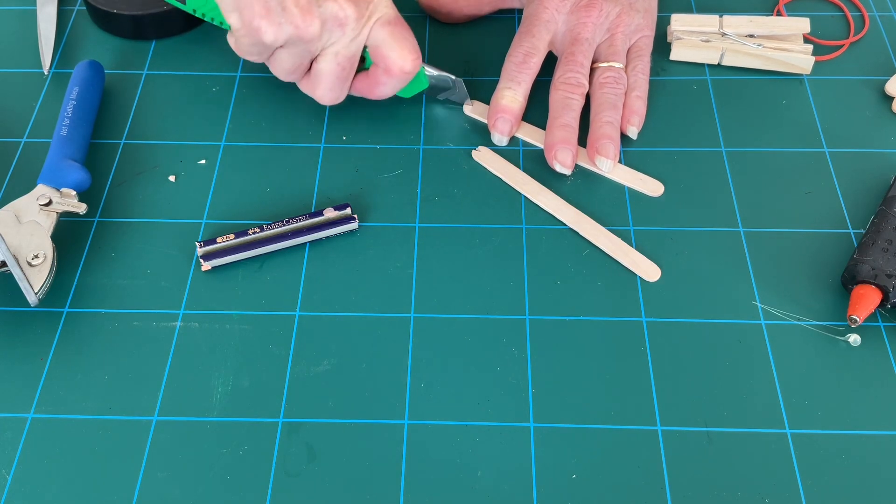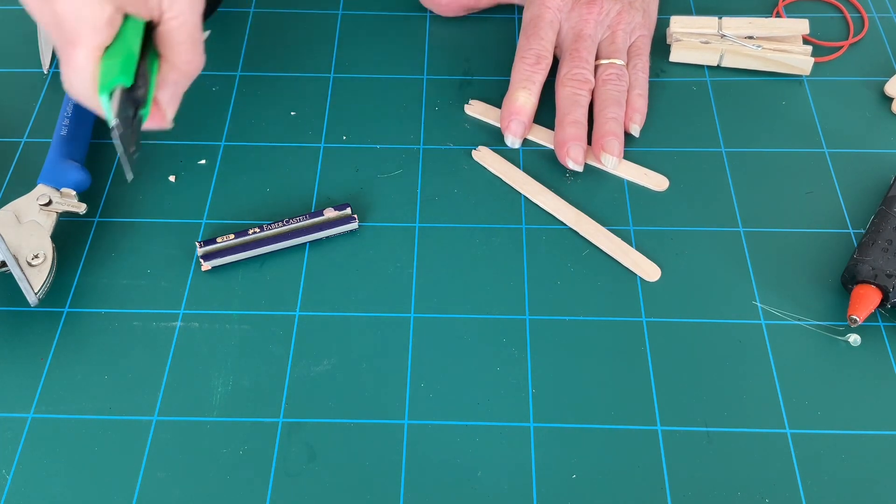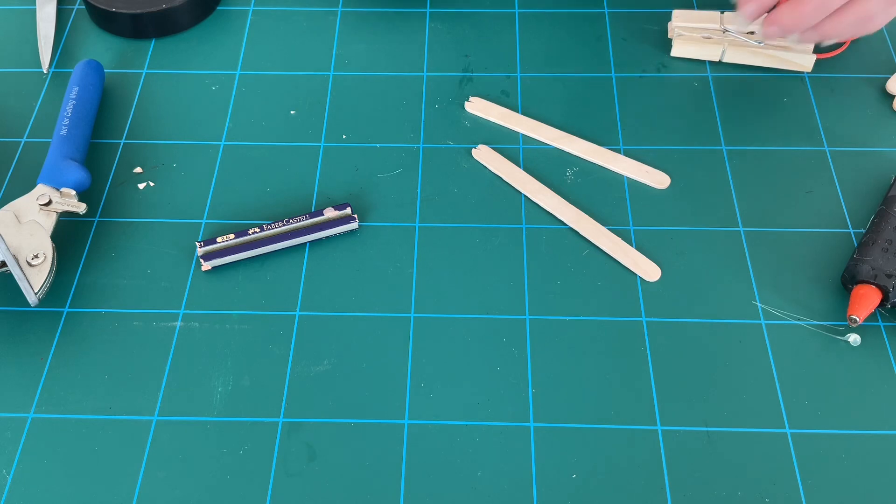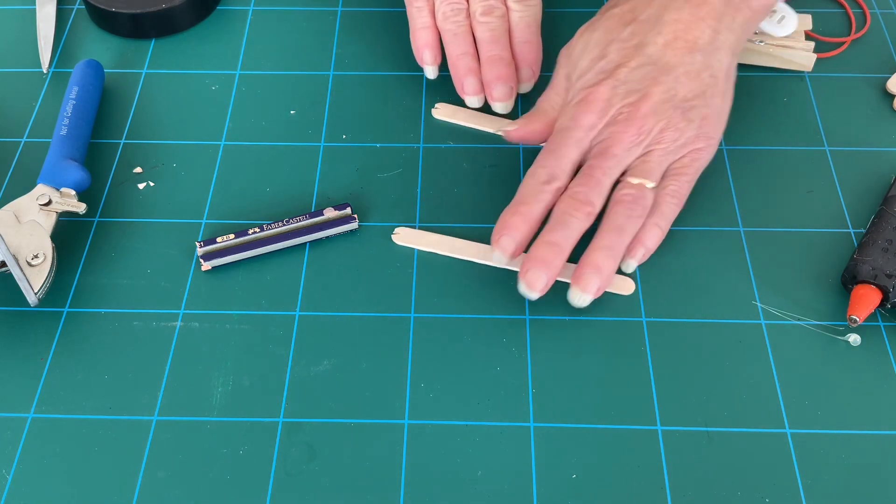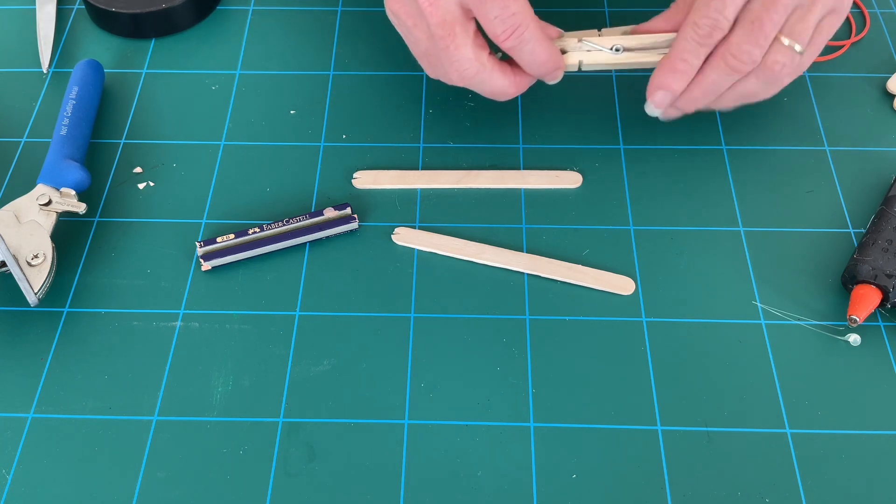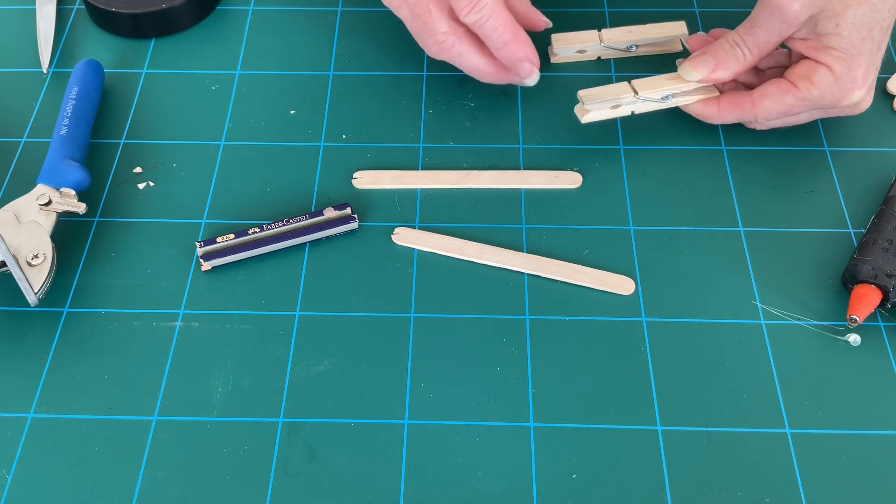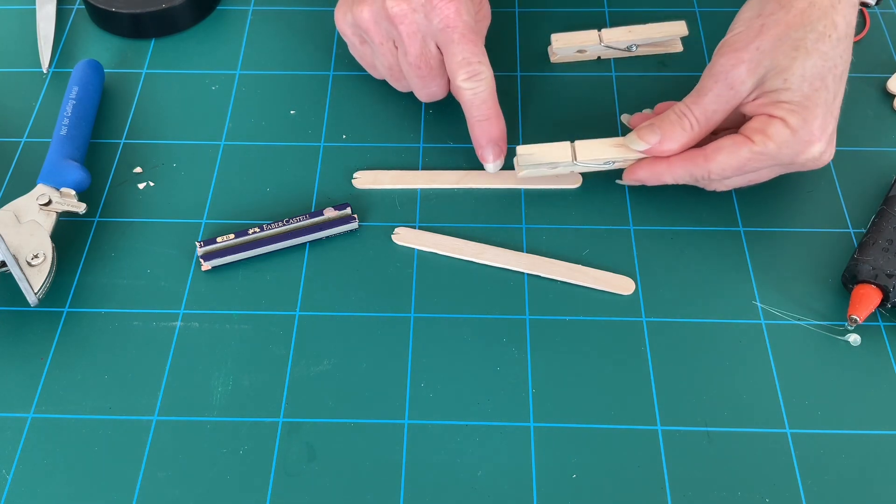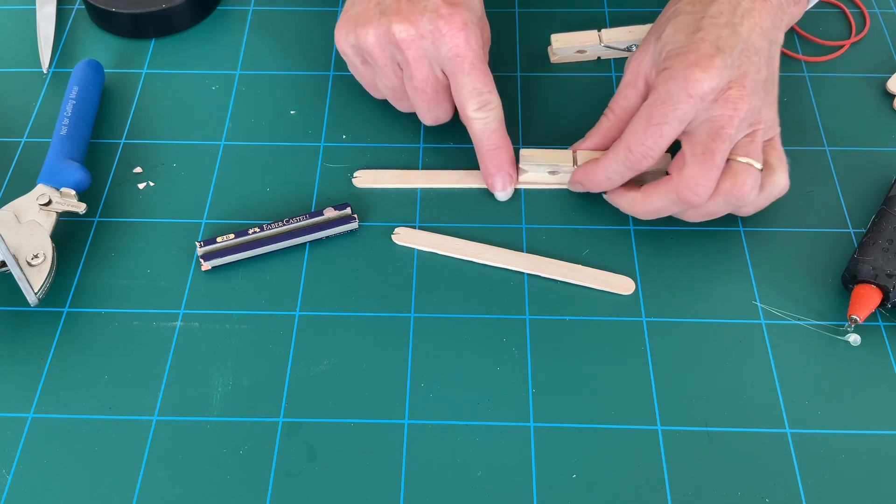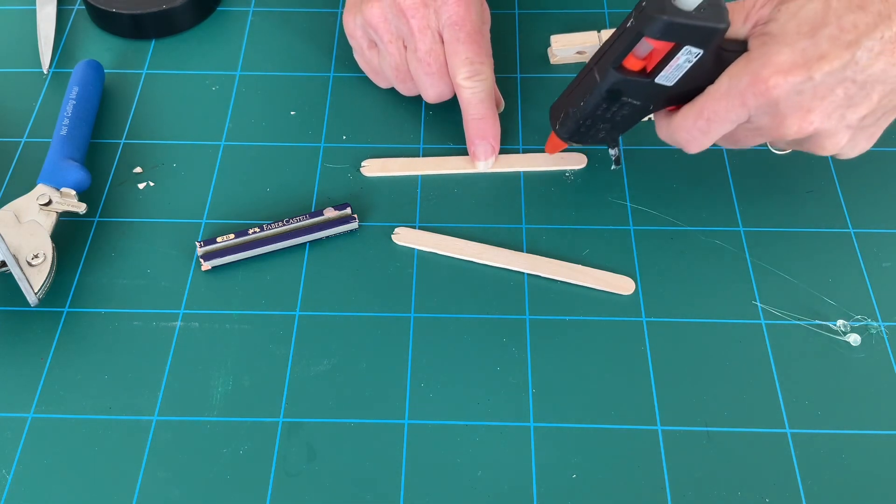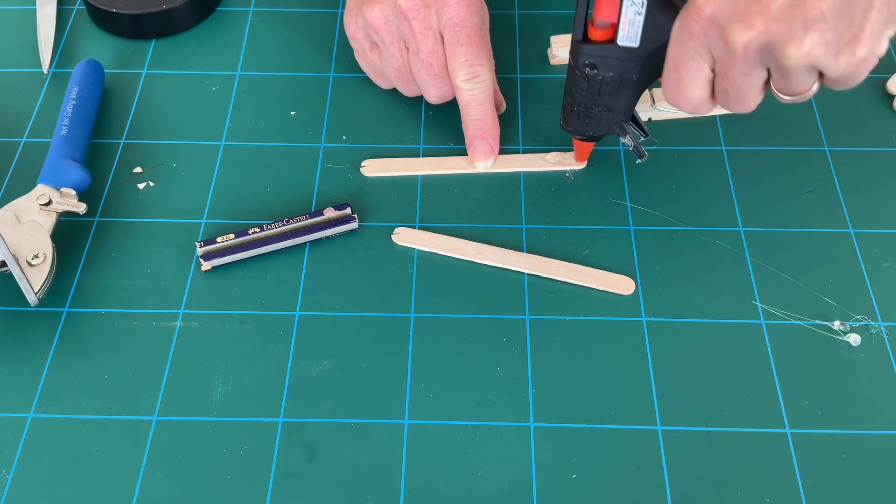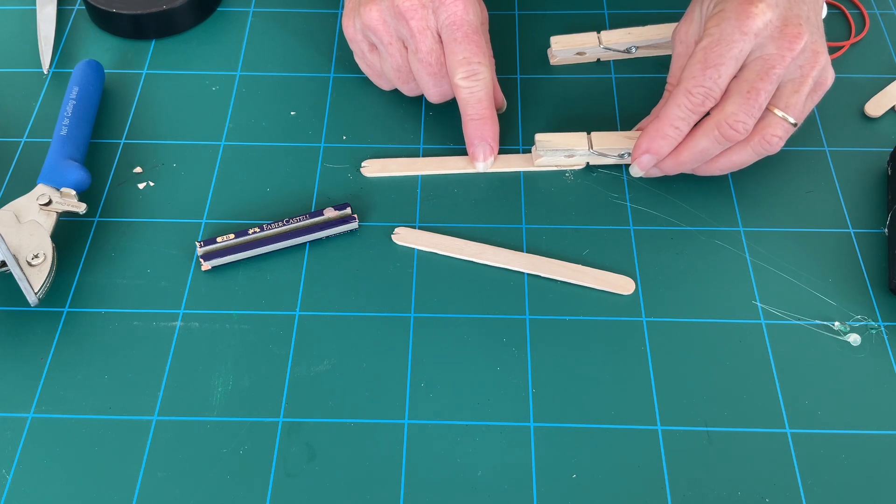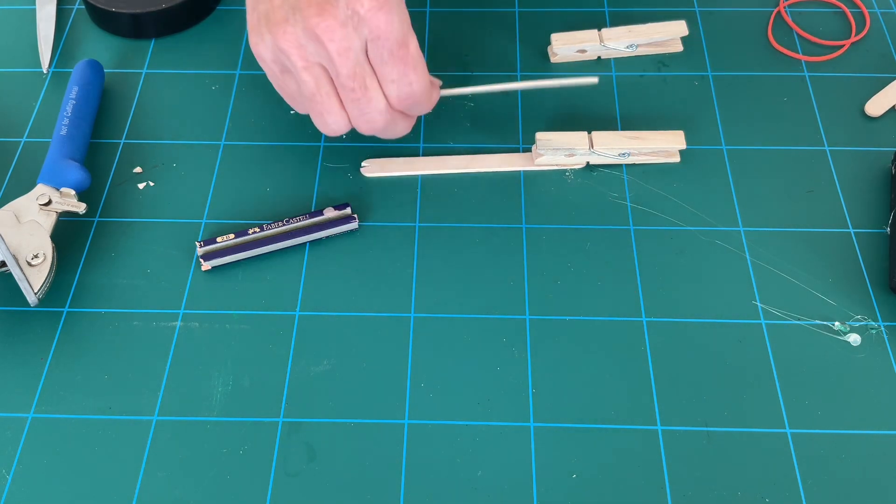Now we're going to glue the unnotched end to our peg. We're going to make sure that the opening end of the peg is here. Pop down some of that glue, put it on there and wait for it to dry. We'll do the same with the other one.